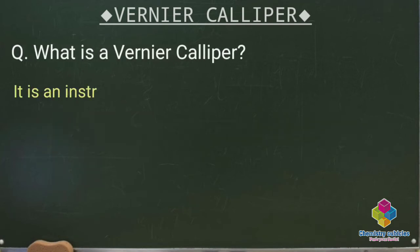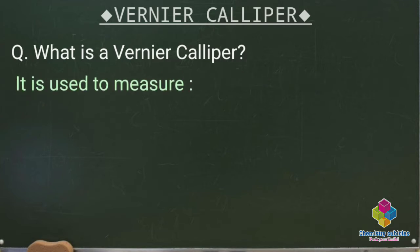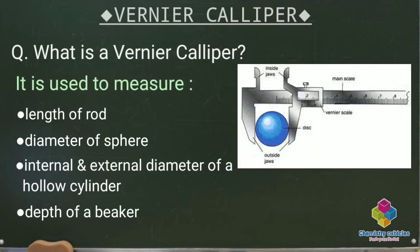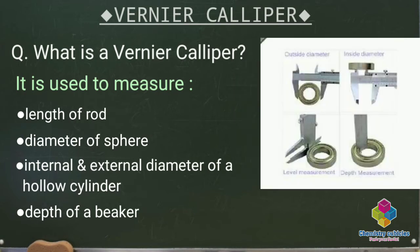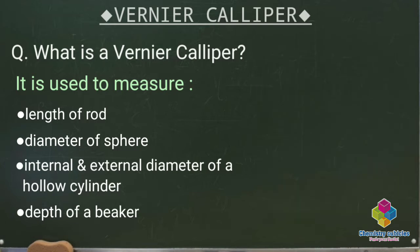Vernier caliper is an instrument which is most commonly used for a variety of exact measurements. It is used to measure the length of a rod, the diameter of a sphere, the internal and external diameters of a hollow cylinder, and the depth of a small beaker. These are a few applications of vernier calipers.